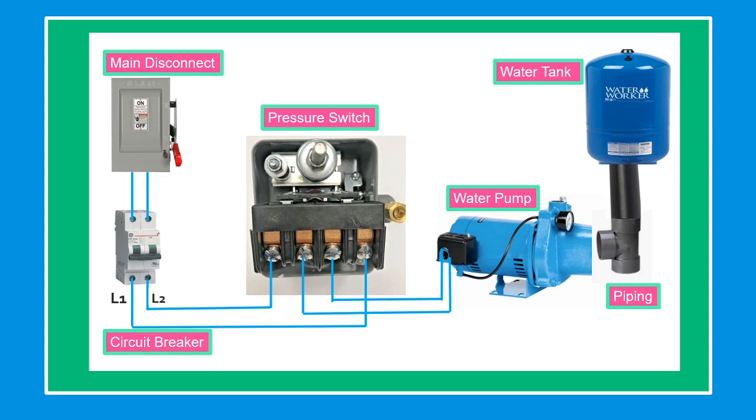The pressure switch is a device that turns the pump on and off according to water demand. The pump is a mechanical device using suction to move the water or liquid from one location to the other.